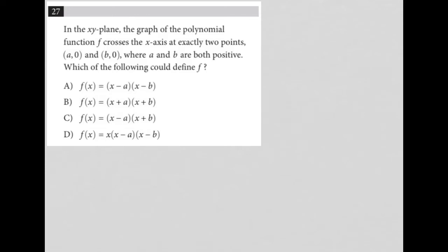So this question says, in the xy plane, the graph of the polynomial function f crosses the x-axis at exactly two points, a,0 and b,0, where a and b are both positive. So I'm just going to get a visual on this.